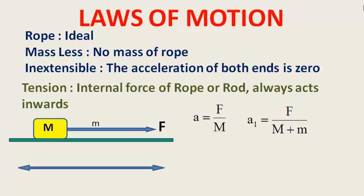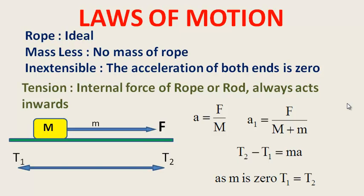Ideal rope में tension देखिए — अगर आप mass के पास काटेंगे तो body उस तरफ जाएगी। दोनों tensions T1 और T2 हैं। या तो T1 बड़ा होगा या T2 बड़ा होगा — कुछ भी हो सकता है। Net force = T1 minus T2 होगी।